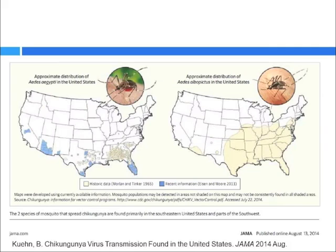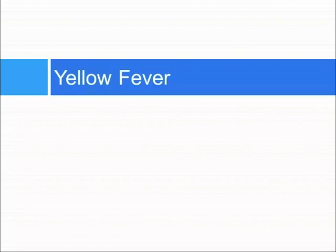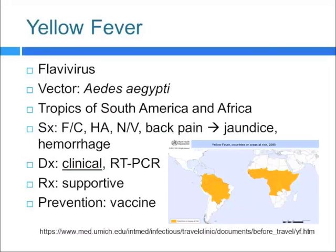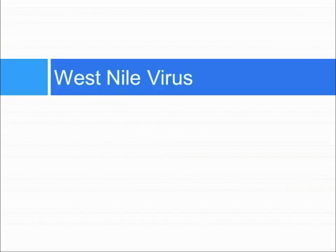This shows the current distribution of chikungunya in the United States. On to yellow fever — it's also a flavivirus, with Aedes aegypti again as the culprit, found in South America and Africa. It causes fevers, chills, and back pain initially, and patients can also develop a second phase which includes jaundice and hemorrhagic components. Diagnosis is primarily clinical, but you can also use PCR. There is a vaccine available for prevention — patients going to endemic areas would benefit from getting vaccinated at least a month before travel if planning to stay a month or more.